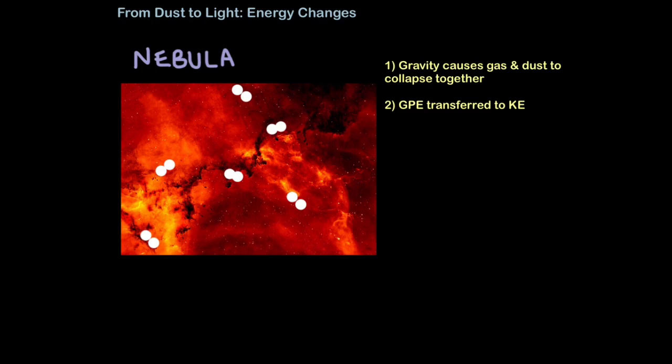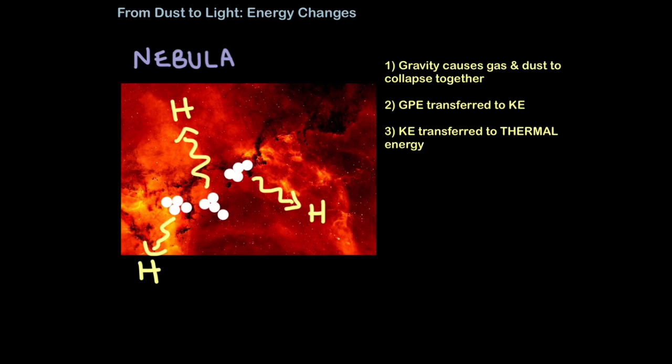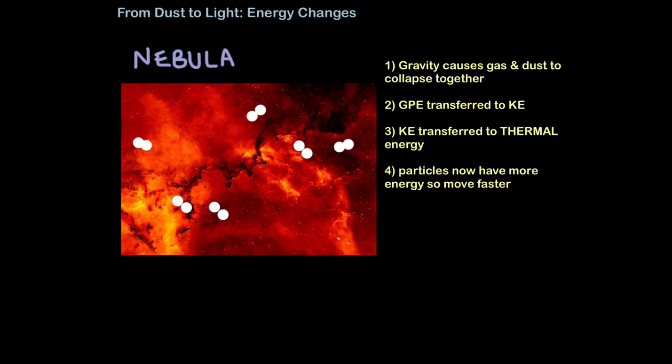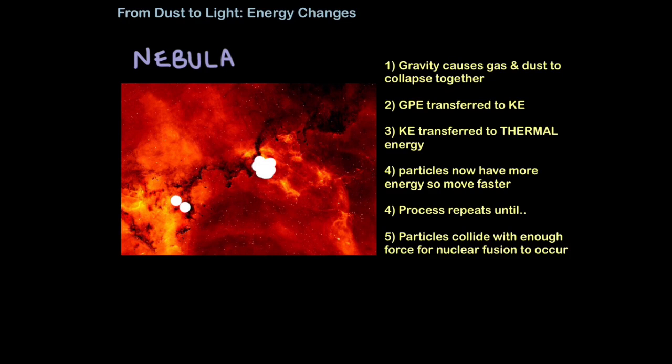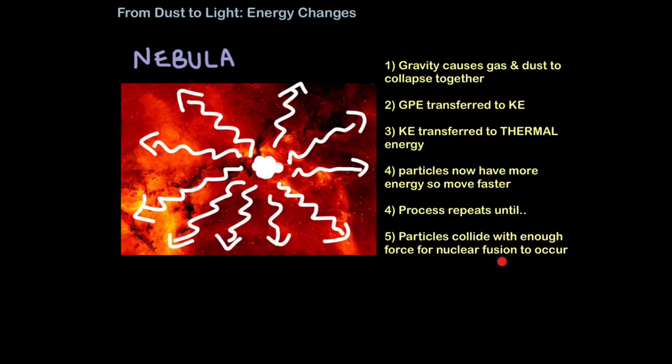Effectively the energy changes: the gravitational potential energy stored in these particles is transferred to kinetic energy as they start to move closer together, brought together by the force of gravity. These particles aren't moving fast or hard enough for fusion to occur yet, but they are being brought closer together. As they collide, just like when you slap your hands together, that kinetic energy is transferred to thermal energy, heat energy. The particles now have more energy so start moving together faster, and this process repeats until particles collide fast enough for nuclear fusion to occur.